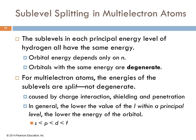For hydrogen, because there's only one electron, the sublevels in each principal energy level all have the same energy. The orbital energy depends only on that principal quantum number. And so we call orbitals with the same energy degenerate, the same energy level. But in multi-electron atoms, these sublevels split. They're not degenerate.